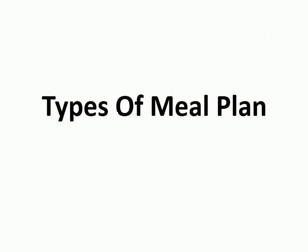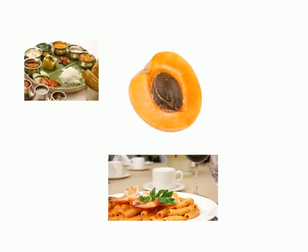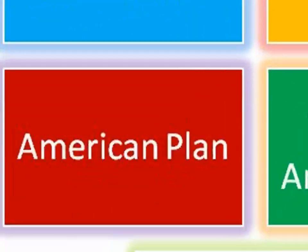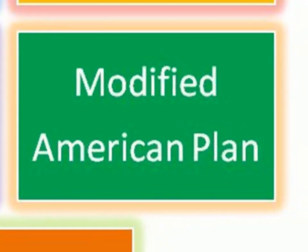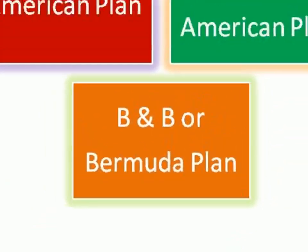Types of Meal Plan. Meal plans are a special type of tariff where the room rate is packaged with meals in various combinations. The main types are: European Plan, Continental Plan, American Plan, Modified American Plan, Bed and Breakfast, or Bermuda Plan.